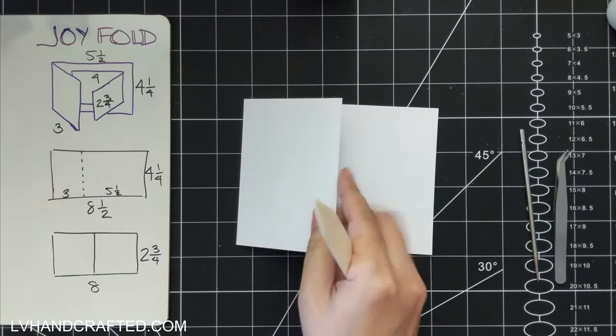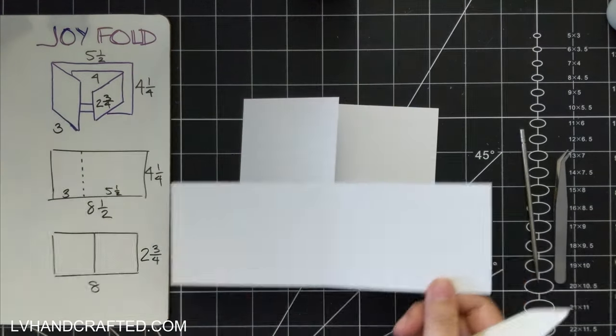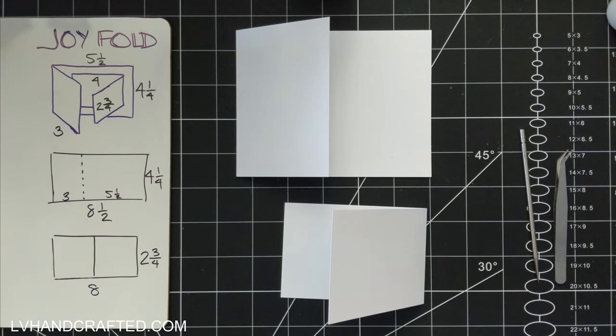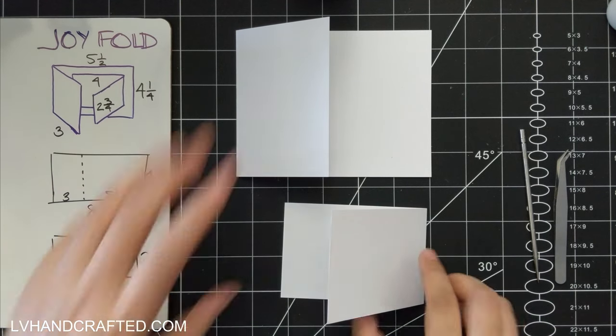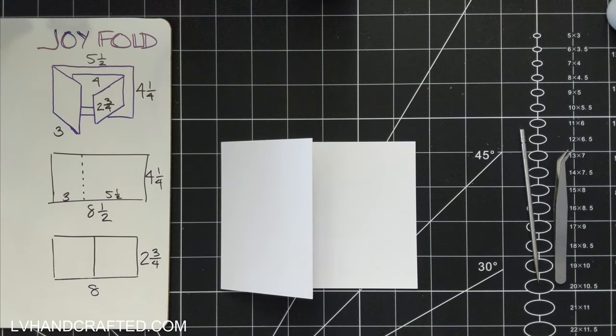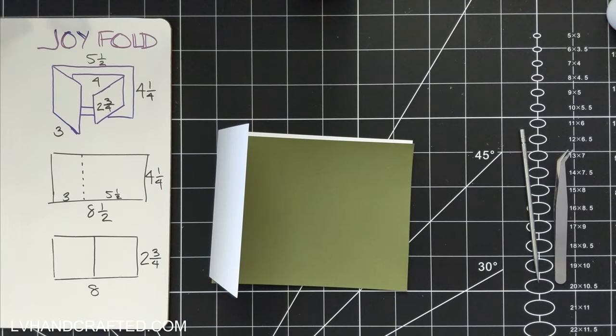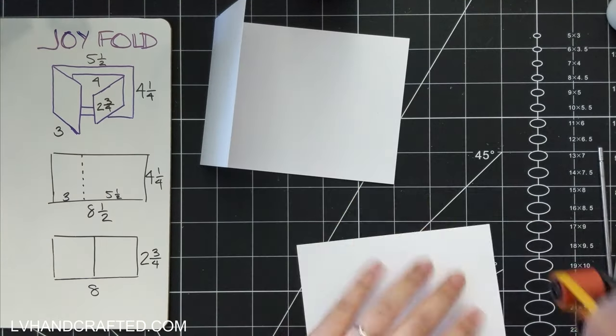So this is going to be an A2, US A2 size card, so it'll fold down to 4¼ high by 5½ inches wide. This first piece here you want to cut at 4¼ by 8½, and along the 8½ inch edge you want to score at 3 inches.